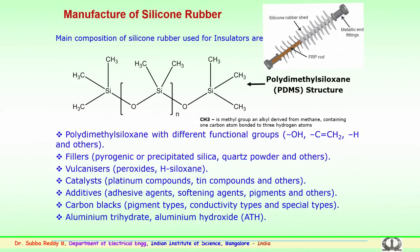Apart from silicon rubber PDMS, fillers are employed — these could be pyrogenic or precipitated silica, quartz powder, and others. Vulcanizers used are peroxides and silicone. Catalysts include platinum compounds, tin compounds, and others. Additives include adhesive agents, softening agents, and various pigments for coloring. Carbon blacks are used as pigments. Aluminium trihydrate — aluminium hydroxide, known as ATH — is used as a filler material for silicon rubber.